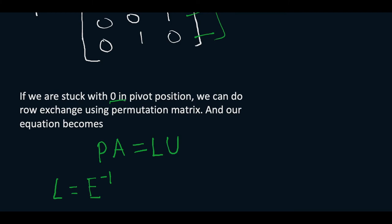If we are stuck with 0 in the pivot position we can use row exchange. Originally our A had a 0 in the pivot, so we applied the permutation matrix to get the proper matrix. Now our equation becomes PA equals LU where L is our inverse of elimination matrix.